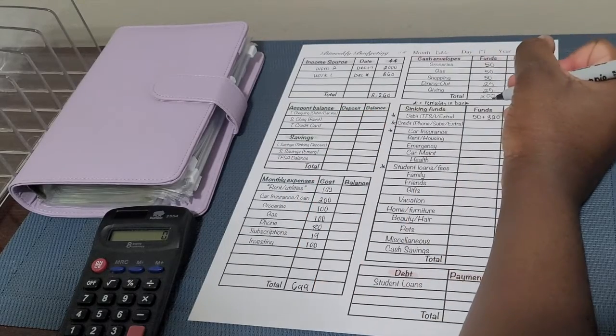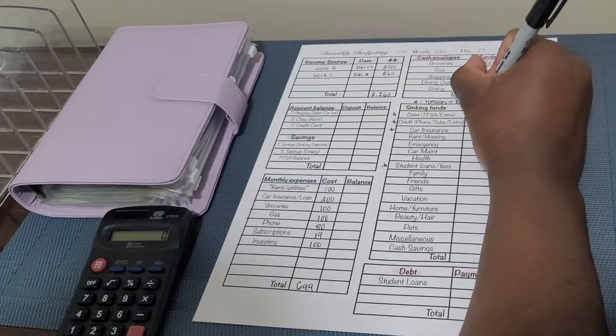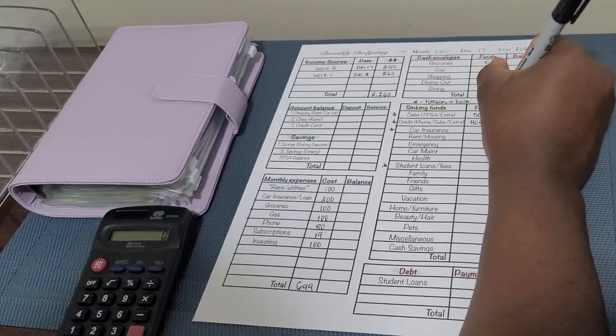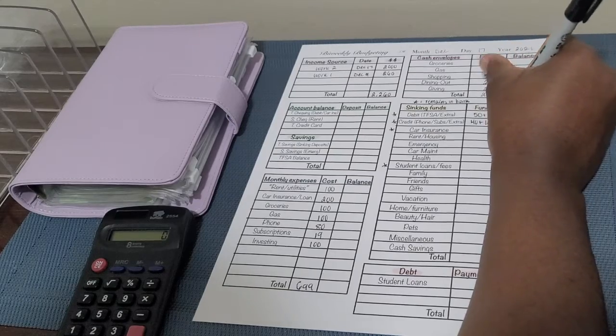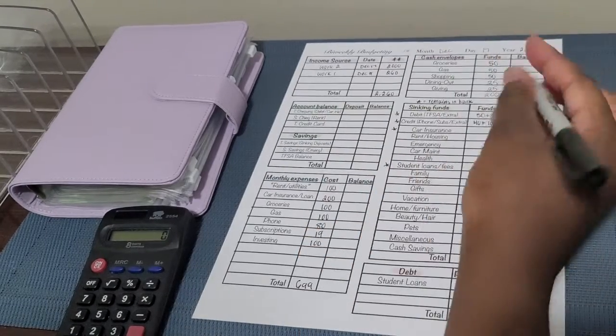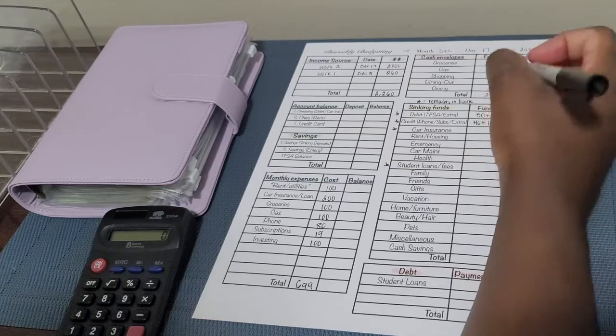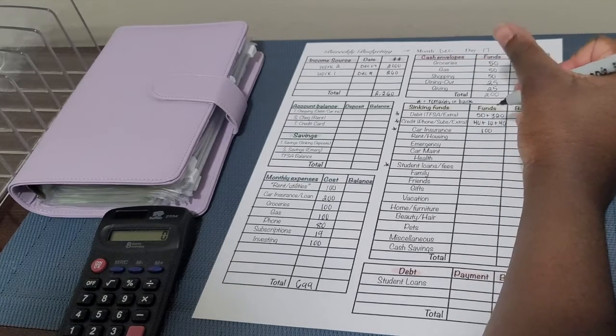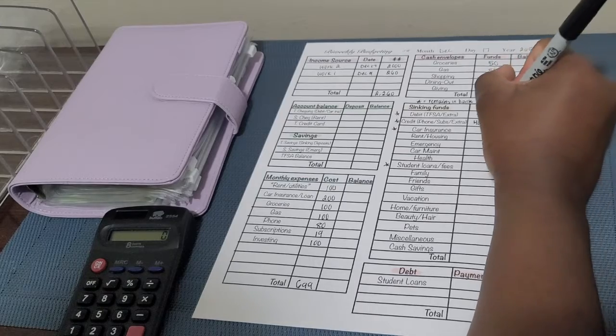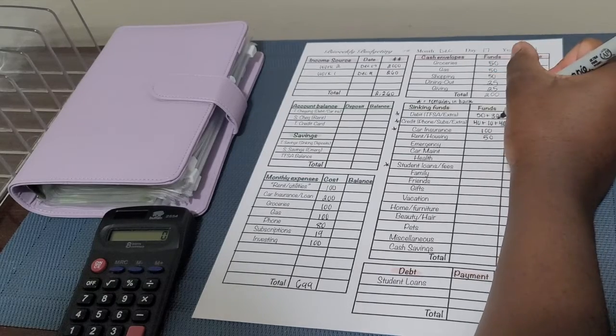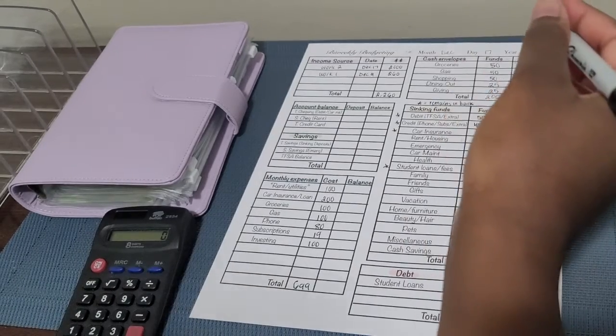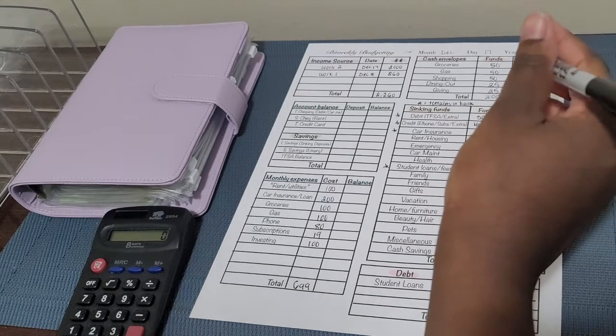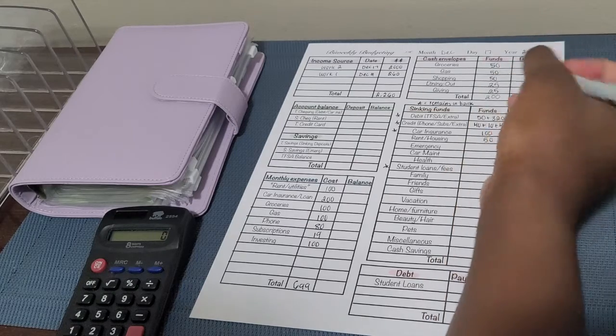Then for credit, the usual amount, so half of my phone, half of subscriptions, and then extra for any parking that I have to do for work. Car insurance, half of that. Rent, half of the theoretical amount, which is, I say theoretical, it's just kind of what I want to be putting, what I want to save up, what I want to put for to save up for it.